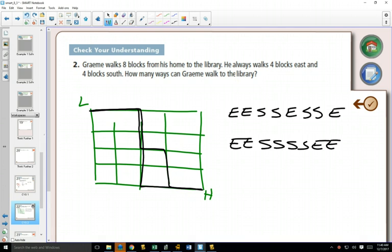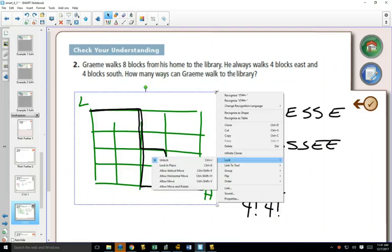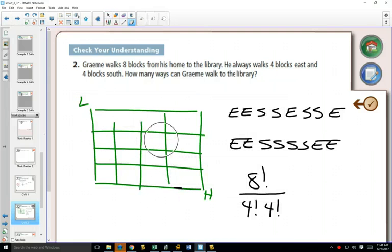So this is an identical objects question because the number of routes that he can get home are just different arrangements of going east and south. And so if you think of this as a Mississippi question, well, there'd be eight factorial if each of them were different, but we have four E's and four S's.